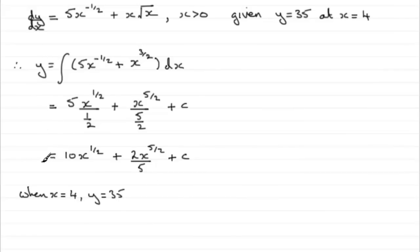We've got what y is, so therefore we have 35 equals 10 times x to the half. So you've got 2 times 4 to the power 5 over 2, and that's all divided by 5, and then plus that constant of integration c.